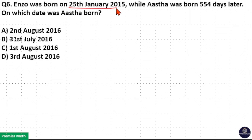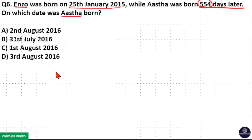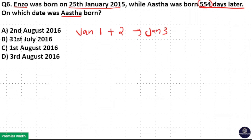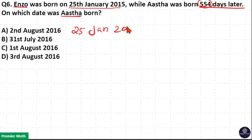Enso was born on 25th January 2015, while Aastha was born 554 days later. On which date was Aastha born? The difference between Aastha's date of birth and Enso's date of birth is 554 days. For example, if you write an exam on January 1st, then two days later on January 3rd your exam result is published. So the same method applies here: 25th January 2015 plus 554 days is the date of birth of Aastha.